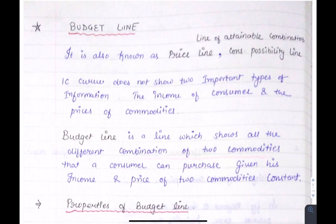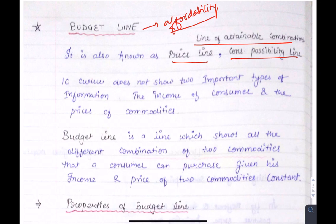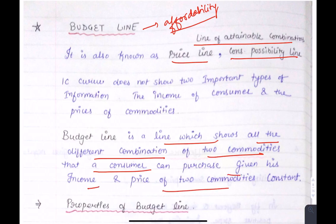Next is the budget line. The budget line shows the affordability of a person — it can also be called the price line, consumption possibility line, or line of attainable combinations. The budget line is a line which shows all the different combinations of two commodities that a consumer can purchase given their income, with prices of the two commodities kept constant.